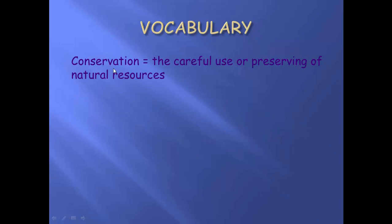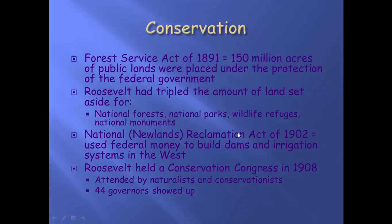Conservation is another big issue for Teddy Roosevelt. Teddy was an outdoorsman — he loved to hunt, he loved the outdoors — and he saw that our nation was destroying our natural resources. So he wanted to conserve some of them, take some areas and say we're not going to touch that stuff. There's a series of legislation that comes out here.